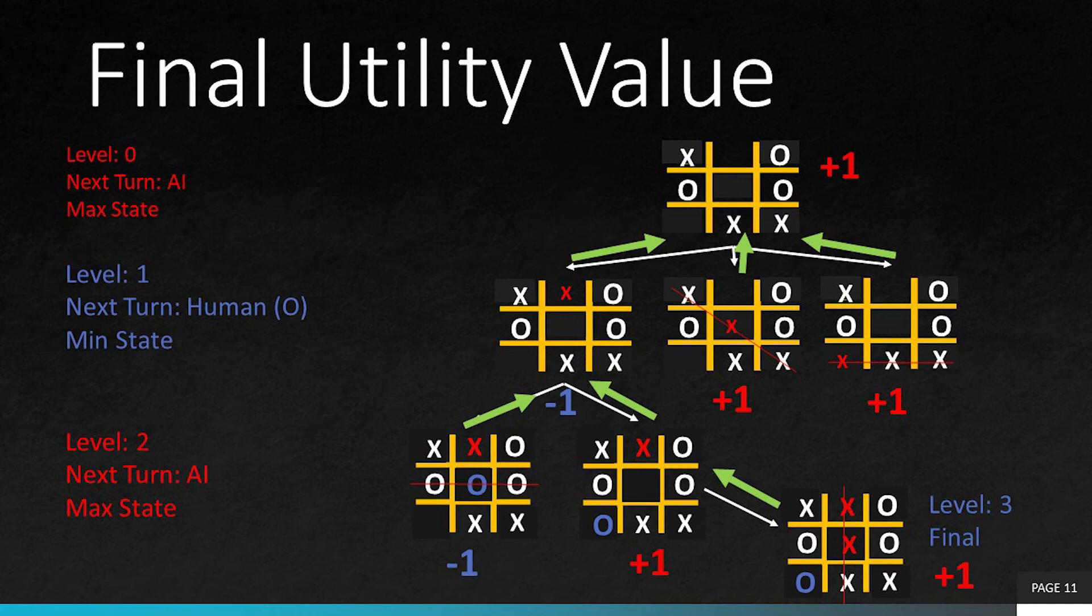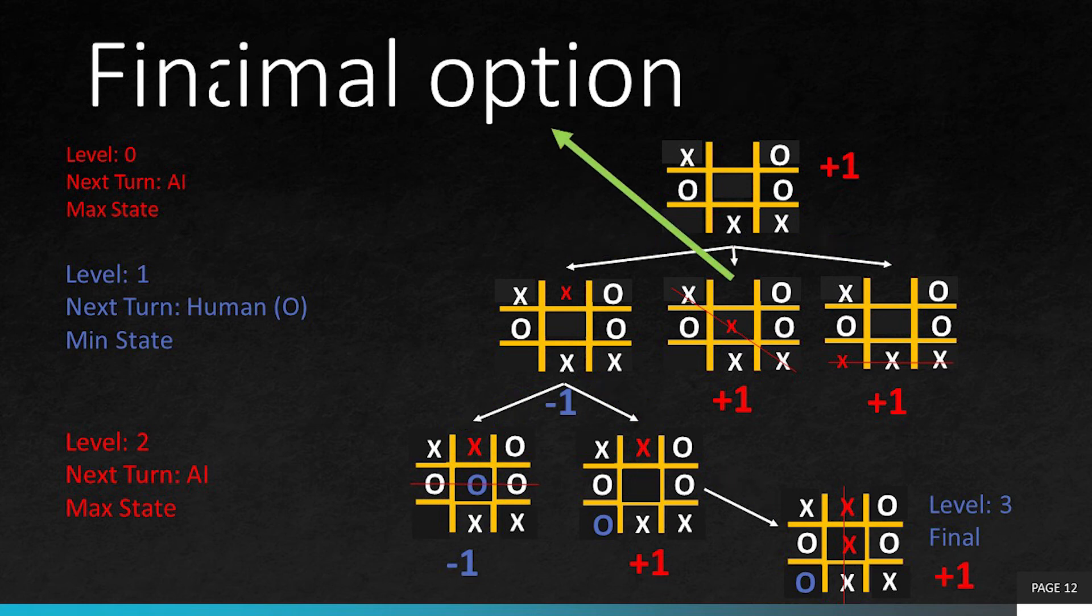Now we have the utilities for all the nodes. There are two possibilities for the next move by the AI as both are plus 1. Our algorithm is going to use the first possible optimal result. This becomes the optimal move for the AI.